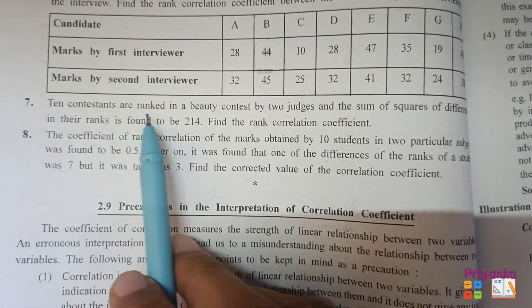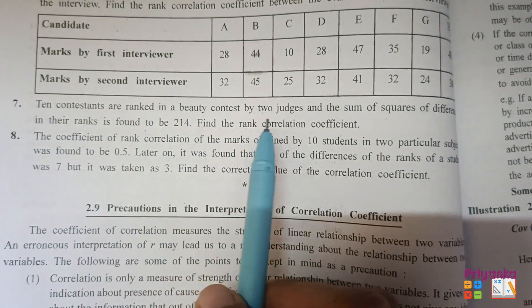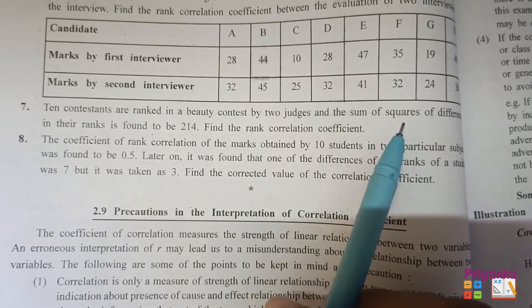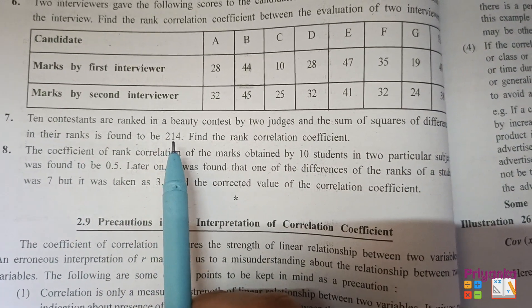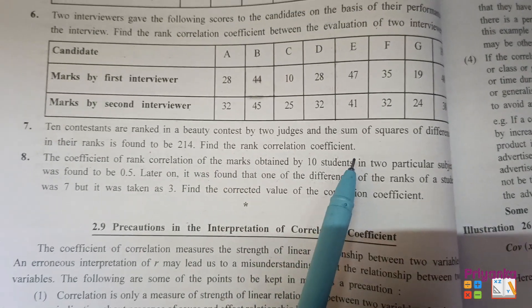Question number 7: Ten contestants are ranked in a beauty contest by two judges and the sum of squares of differences in their rank is found to be 214. Find the rank correlation coefficient.